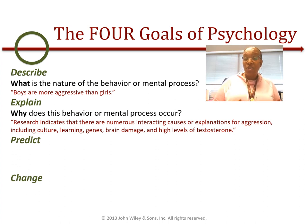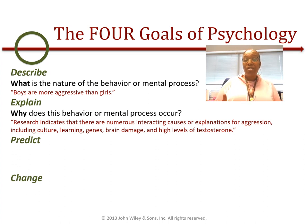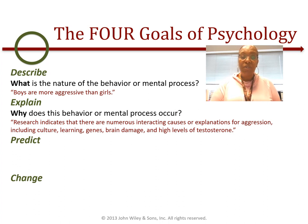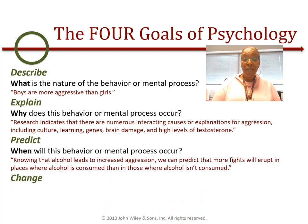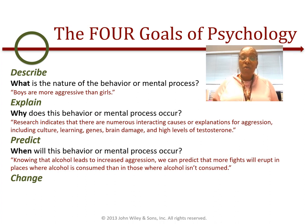One way of stating an explanation: research indicates that there are a number of interacting causes for aggression, which include culture, learning, genes, brain damage, and high levels of testosterone. Once we can describe and explain a behavior or mental process, we attempt to predict whether or not a behavior will occur again. Knowing that alcohol leads to increased aggression, we can predict that more fights will erupt in places where alcohol is consumed than where it isn't.